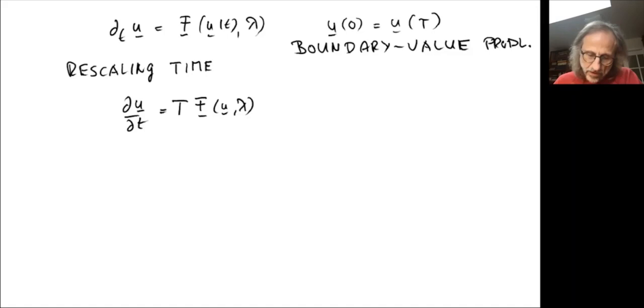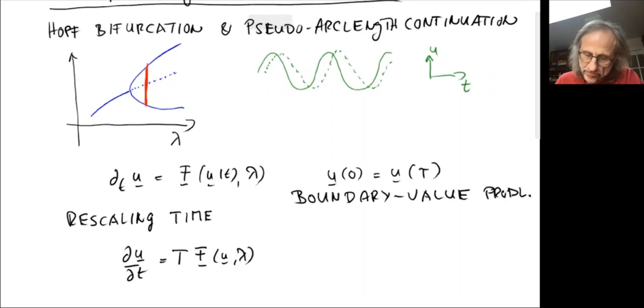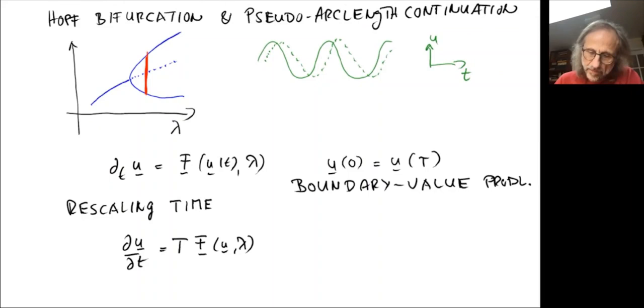So as I said, for each parameter value lambda, there's not just one solution, but there's a whole continuum solutions that differ in their phase. The phase can go from zero to two pi. And we would like to pick only one of them.